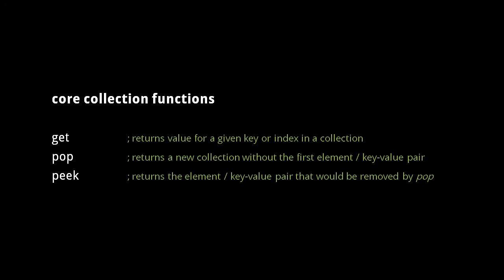Here we have three more collection functions. get returns the value of a particular key or index in a collection. pop returns a new collection that omits the first element or key-value pair in a collection. peek returns the element or key-value pair that would be removed by pop.